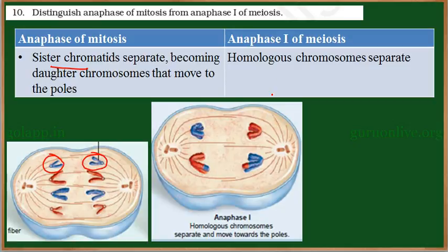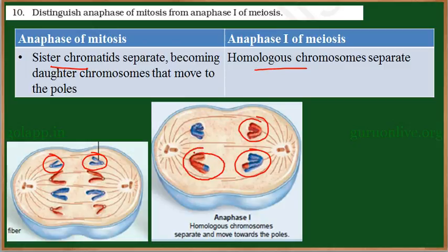Whereas in anaphase 1 of meiosis, the homologous chromosomes separate, but the sister chromatids remain together.